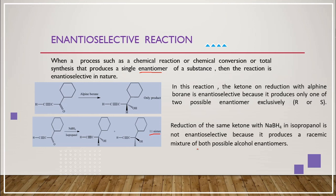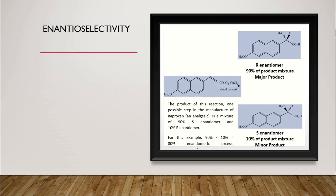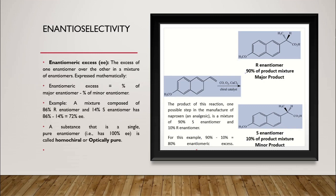To make it simple, when we end up with only one enantiomer, we call the reaction enantioselective in nature. Enantiomeric excess is a factor that helps us identify the percentage of one enantiomer over the other. The excess of one enantiomer over the other in a mixture is expressed mathematically as: enantiomeric excess equals percentage of major enantiomer minus percentage of minor enantiomer.